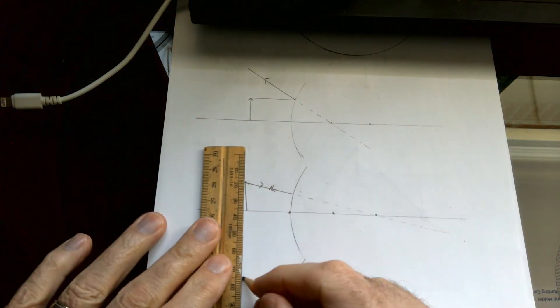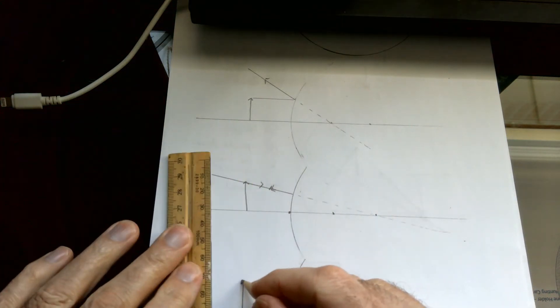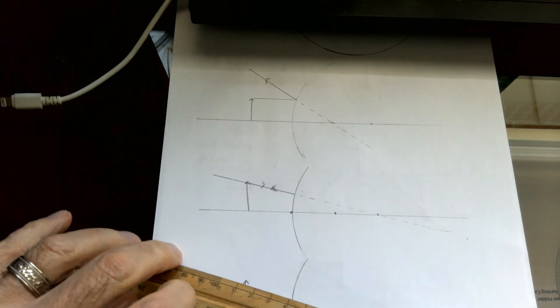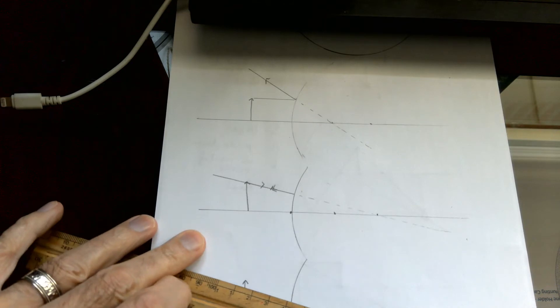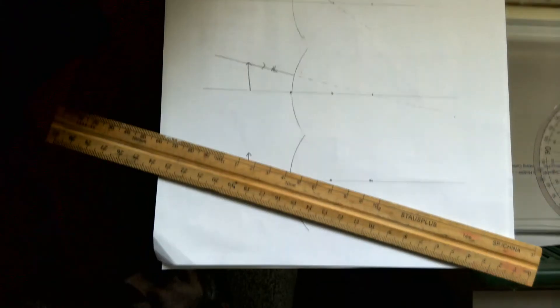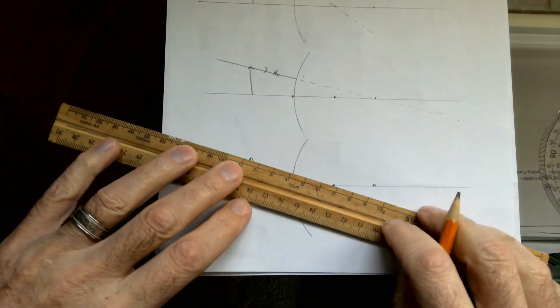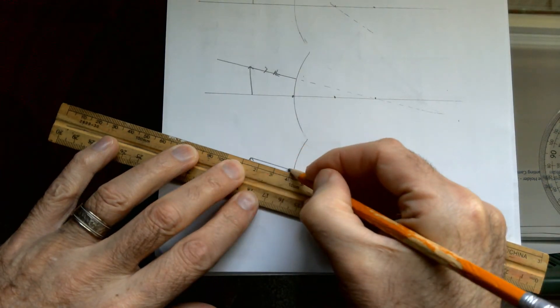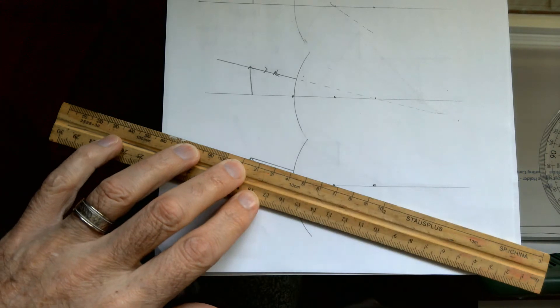The last line that we're going to draw on a convex mirror is we aim directly at the focal point. We aim from the top of the object directly at the focal point. And then we stop.